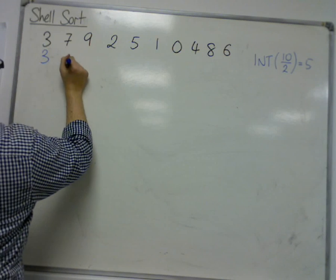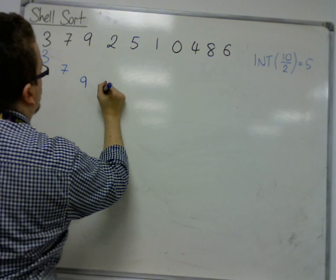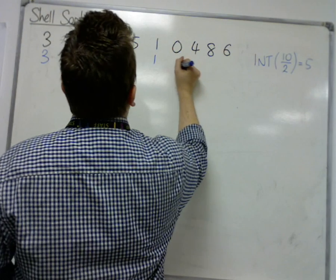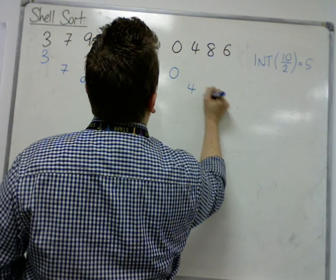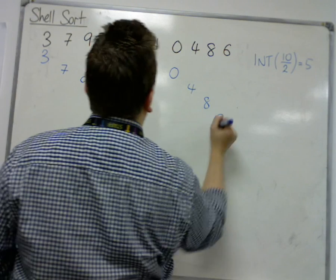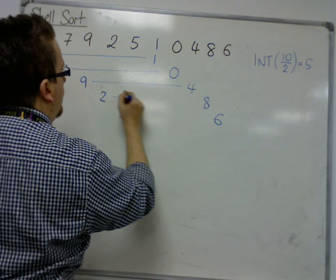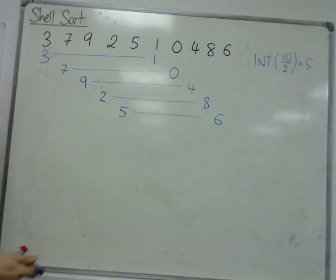5 sublists, 2 in each, so that we have 3, 7, 9, 2, 5, 1, 0, 4, 8, 6. So that we have 1, 2, 3, 4, 5 sublists.